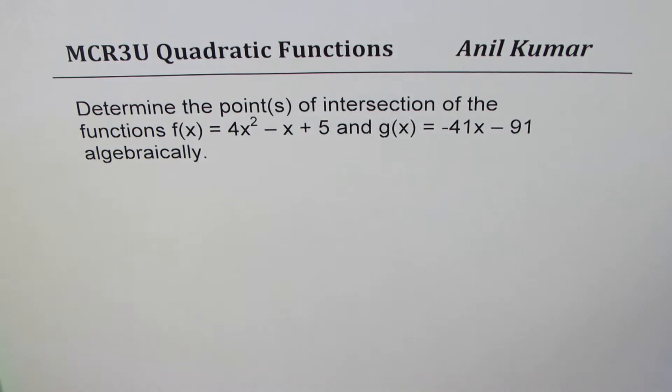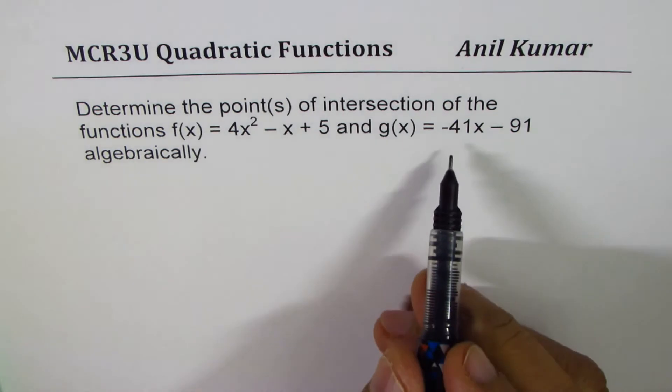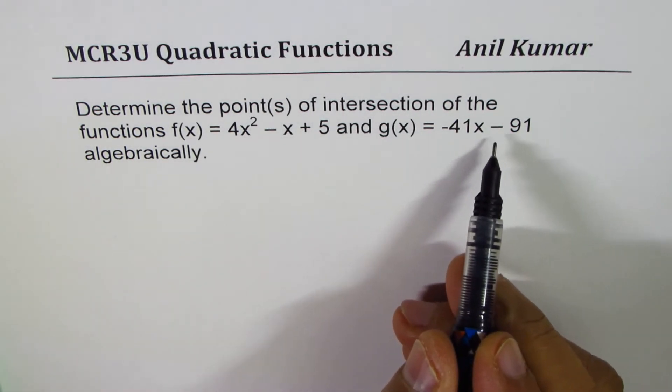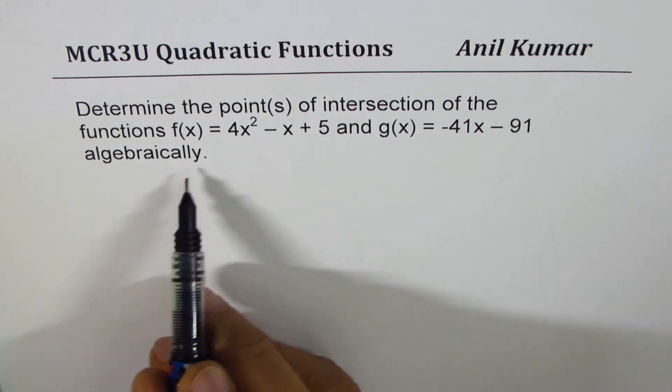determine the points of intersection of the function f(x) = 4x² - x + 5 and g(x) = -41x - 91, algebraically.